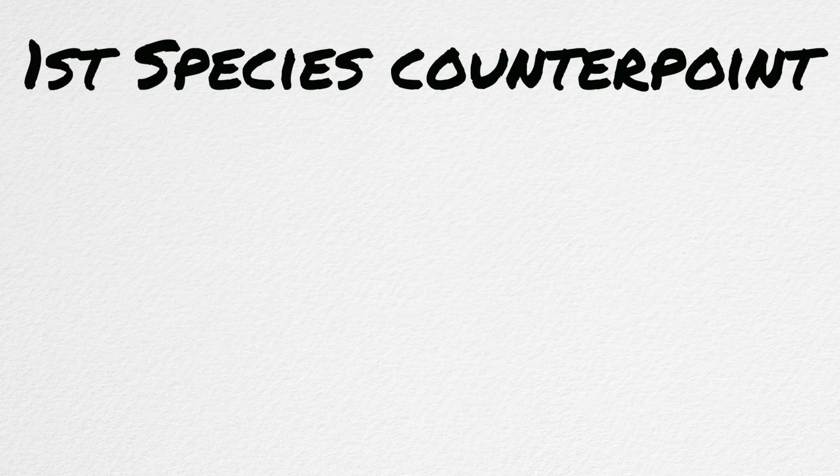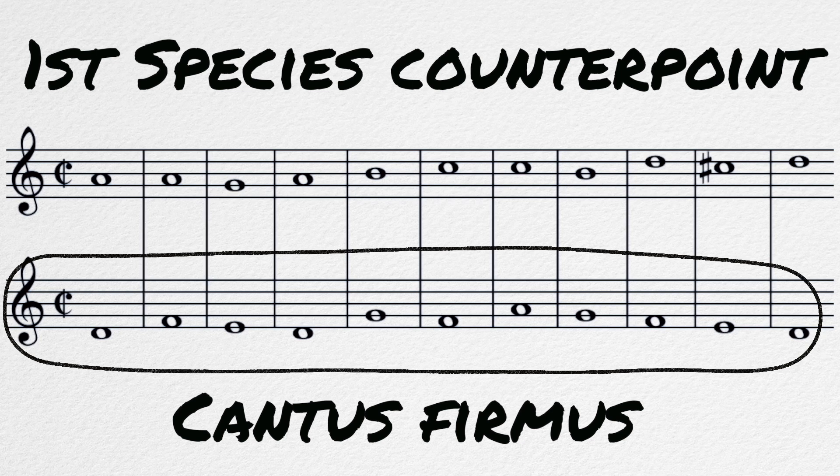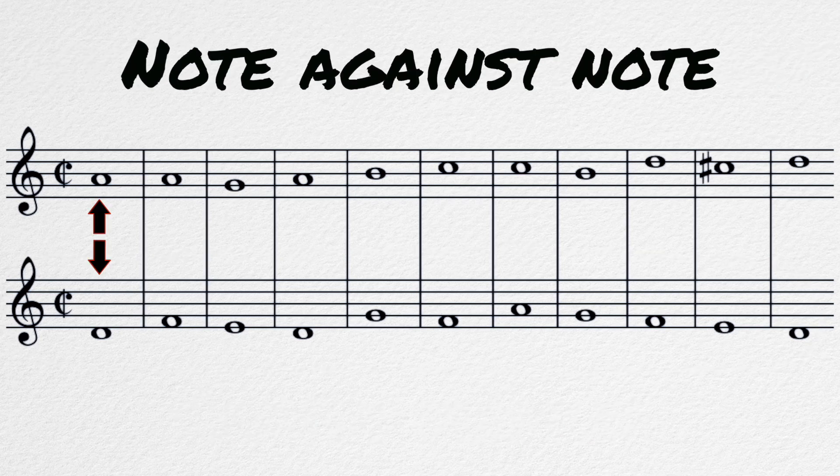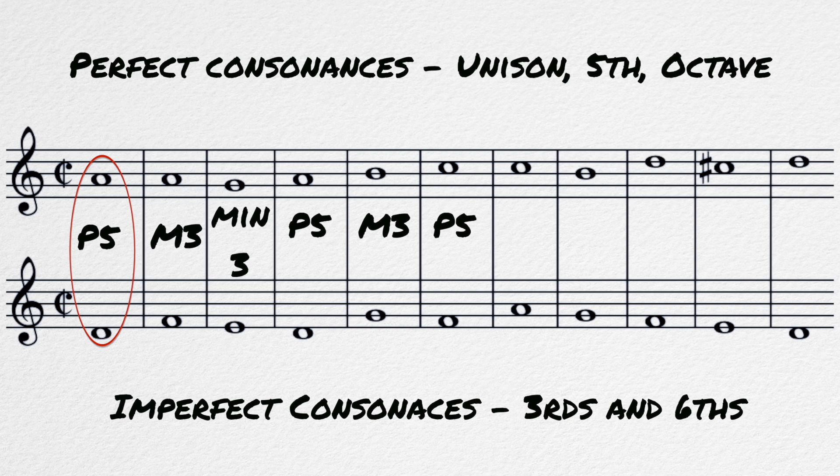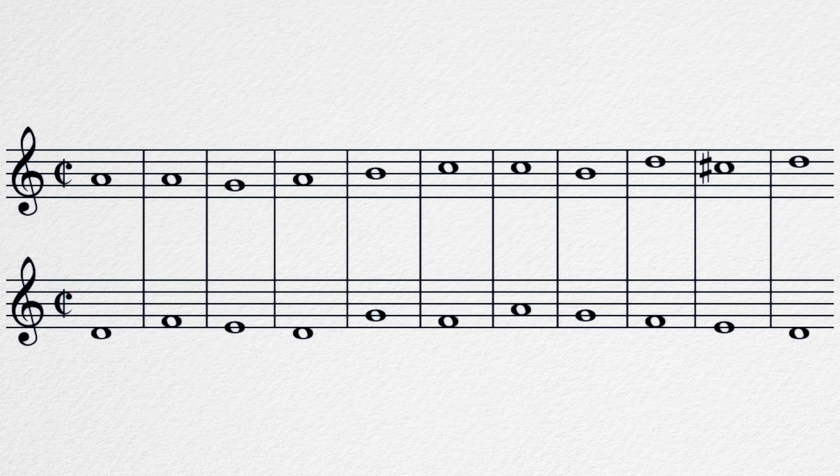So let's dive in. First species counterpoint. In each example, we are given a cantus firmus, a firm melody that we are given that we have to build a melody on top of. The first species of counterpoint is note against note. All of the notes are the same length and they always move at the same time. In this species, we are only to focus on the consonances, the perfect and imperfect.